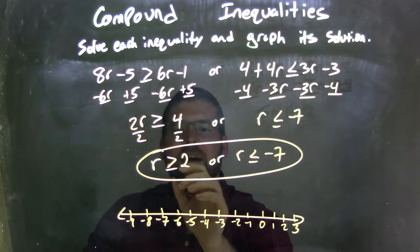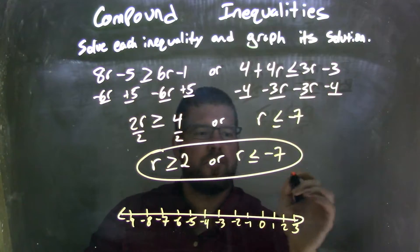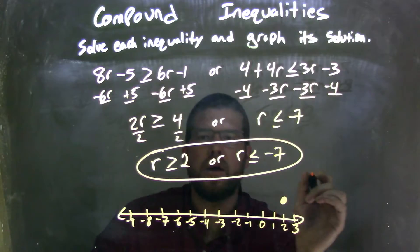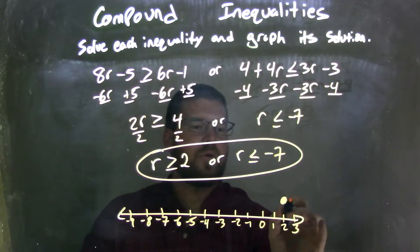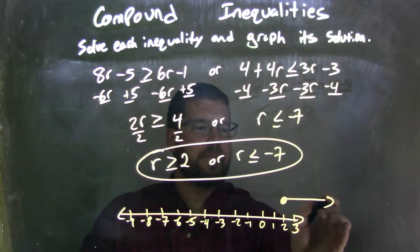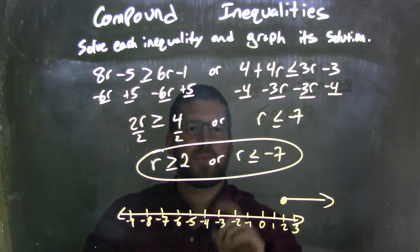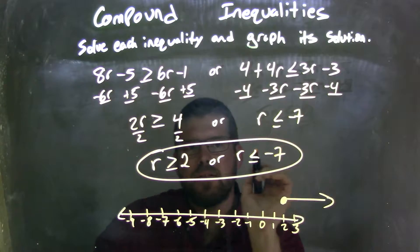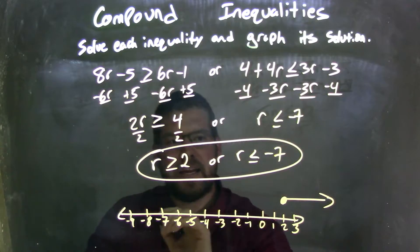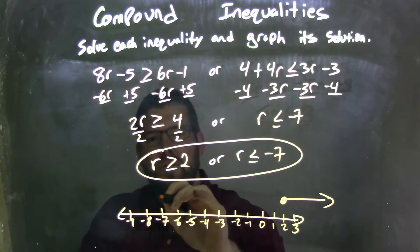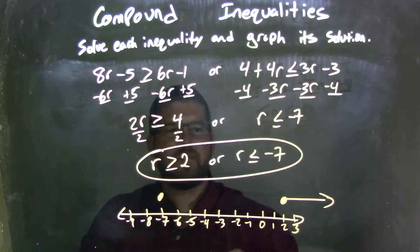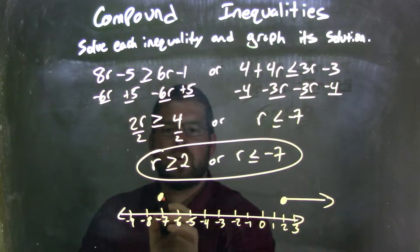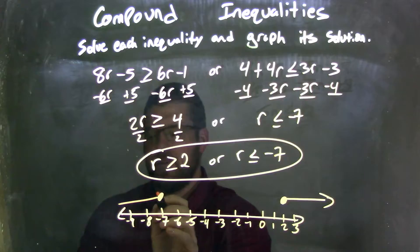For the first one, we said r is greater than or equal to 2. So I have a closed circle at 2 because it can equal 2, and r is also greater than 2, so I put my arrow to the right. The next one, r is less than or equal to negative 7, so at negative 7 it can equal negative 7, so I have a closed circle at negative 7.